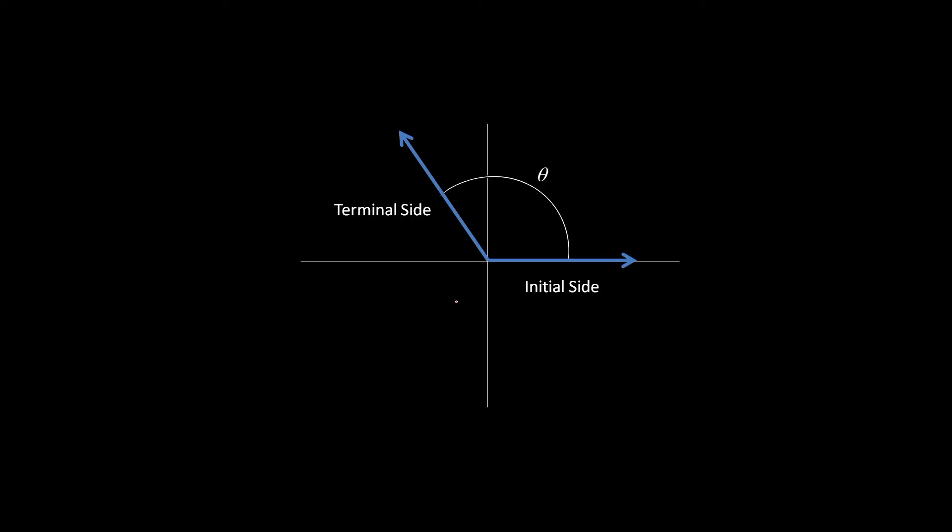So we have an XY coordinate system. Positive X axis, we call that the initial side. We rotate that through, and where we stop is the terminal side. And that sweeps through some angle.